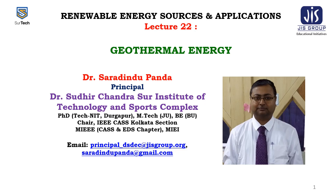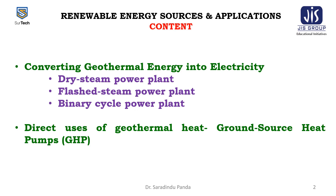In today's lecture, I want to describe geothermal energy sources. The second part of this lecture covers converting geothermal energy into electricity. There are three types of processes: the dry steam power plant, flash steam power plant, binary cycle power plant, and the hybrid power plant, as well as the direct uses of geothermal heat through ground source heat pumps, called GHP.